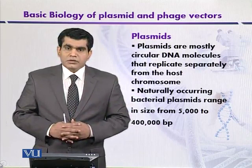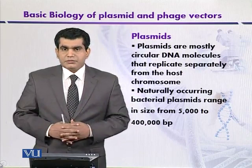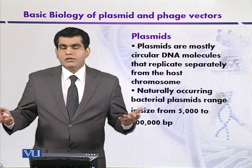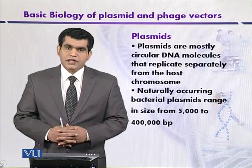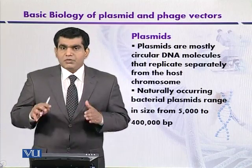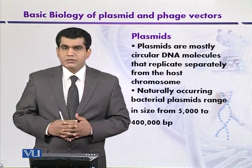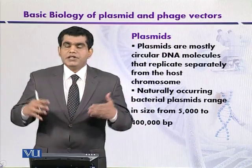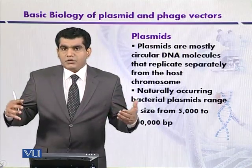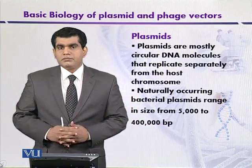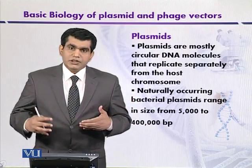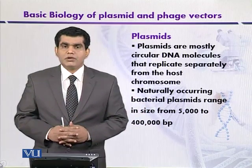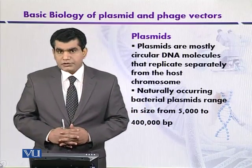We are going to start our discussion with plasmids. Plasmids are mostly circular DNA molecules that can replicate independently of the host chromosomes because they contain their own origin of replication. For this reason, they are called replicons.